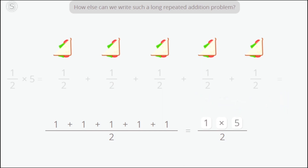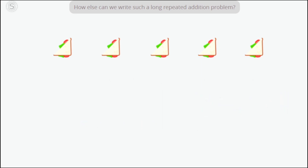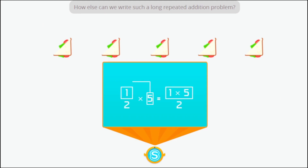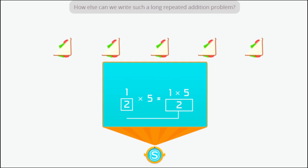Great! To multiply a fraction by a whole number, all we need to do is multiply the numerator by the whole number and keep the denominator the same.